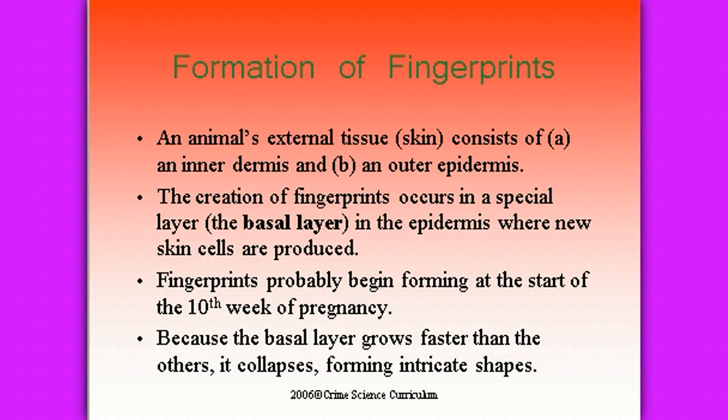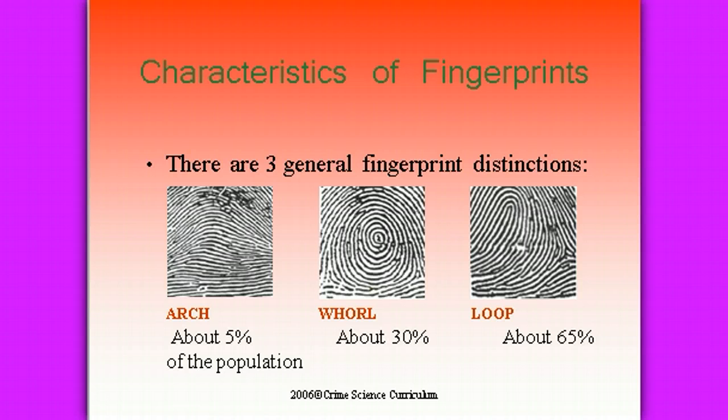Fingerprints probably form by the start of the tenth week of pregnancy. Because the basal layer grows faster than the others, it collapses in on itself and forms those intricate shapes. The three general fingerprint distinctions include the arch, the whorl, and the loop.